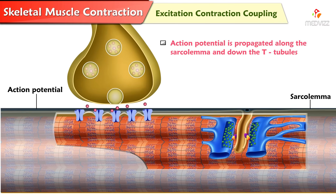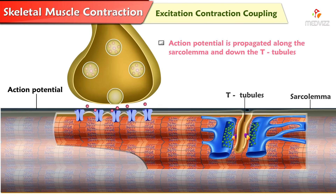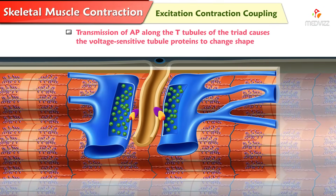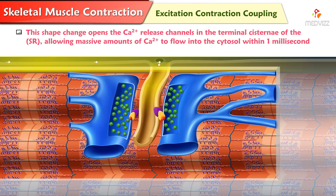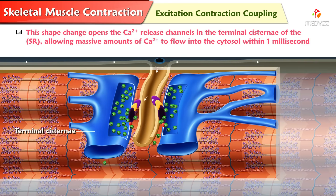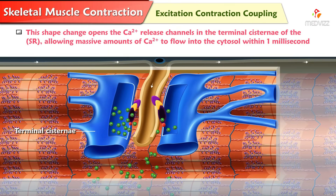Action potential is propagated along the sarcolemma and down the T-tubules. Transmission of action potential along the T-tubules of the triads causes the voltage-sensitive tubule proteins to change shape. This shape change opens the calcium release channels in the terminal cisternae of the sarcoplasmic reticulum, allowing massive amounts of calcium to flow into the cytosol within 1 ms.